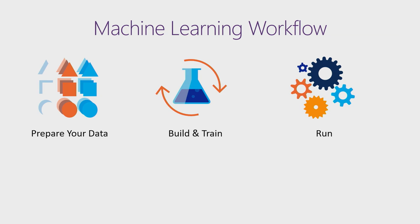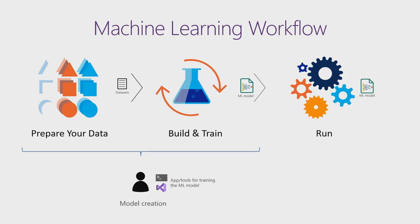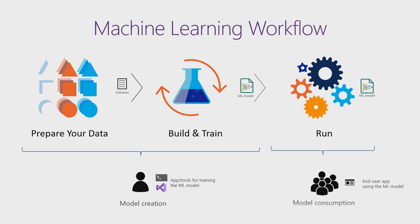An important thing about machine learning is that it's not just like building an application. You need to focus first on the model and the data — you prepare your data and build and train your model. That's the background process you do as a developer, using tools like the CLI or console applications. Once you have the model, which is a zip file when serialized, you deploy it into your end-user applications in production.